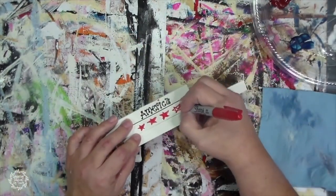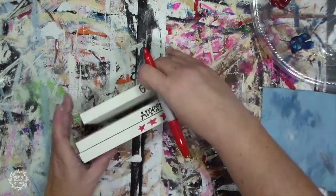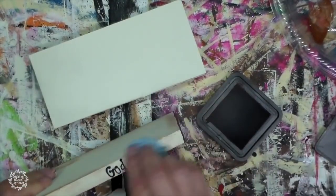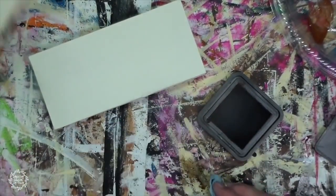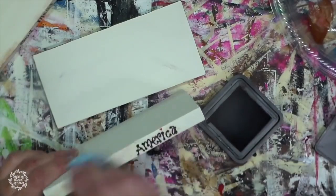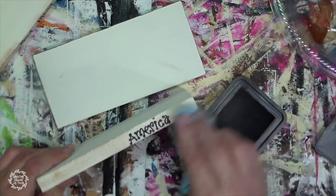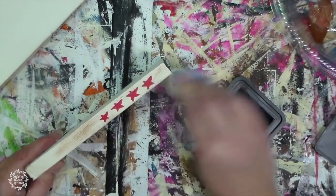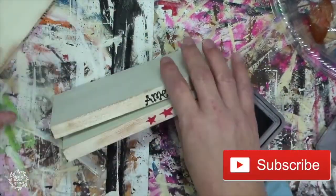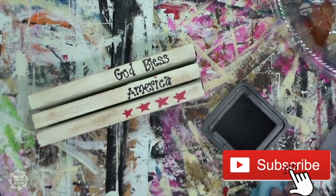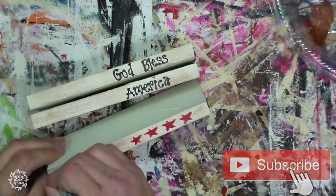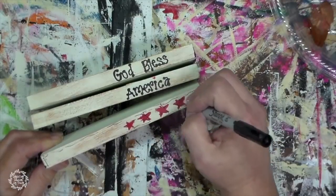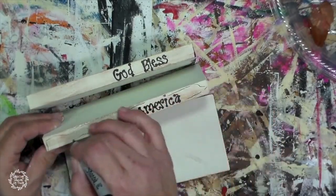Then I will take my vintage photo distressing ink and I will just go around it and give it a bit of distressing which I like to do just to give it an aged look. I will have a link to some other books that I have done. I've done some for Valentine's Day as well as for the Easter season and I just love these little books. They look great on a three-tiered tray or on a shelf or just something to decorate for the season.